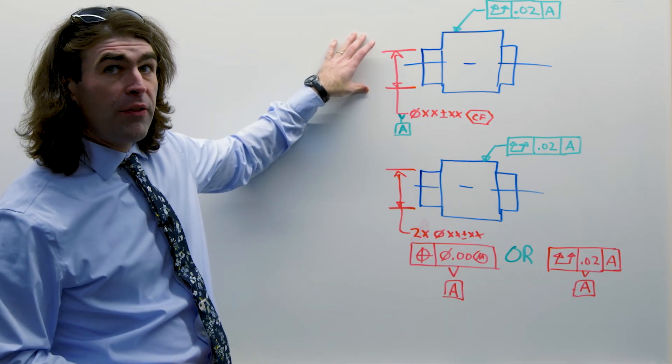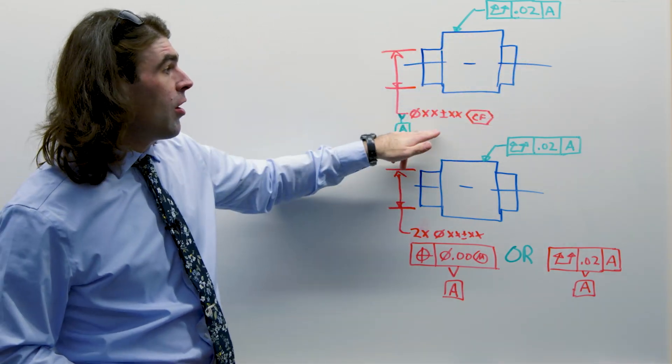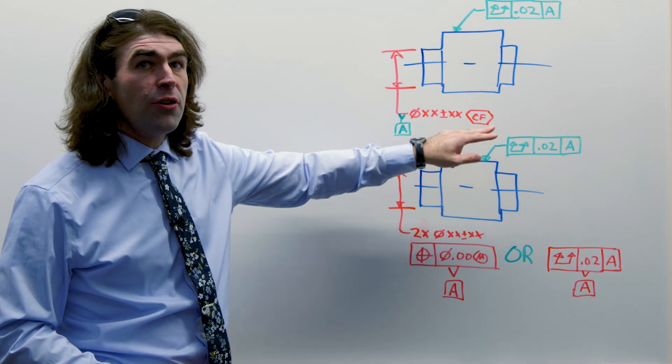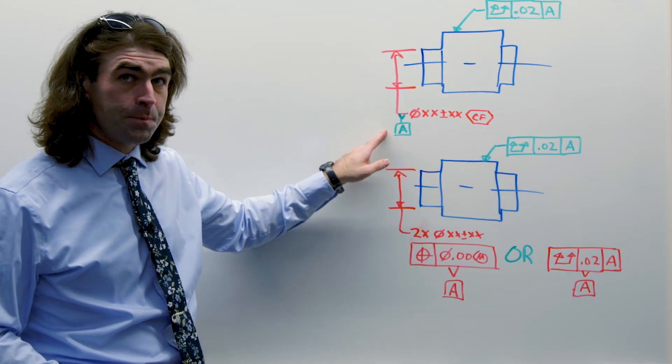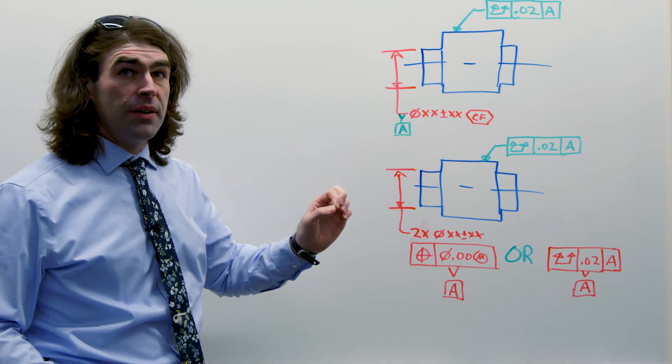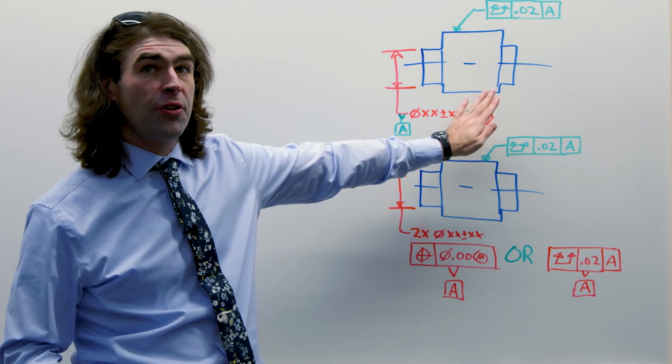So in this situation, we've got these two diameters, one and two. We're going to call it out as continuous feature and identify that as datum A. Now, this is different from saying two times diameter whatever without continuous feature.